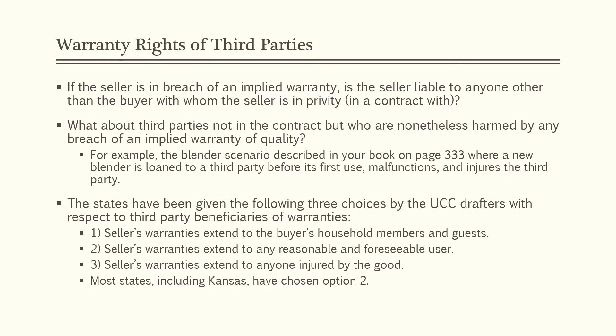In Kansas, the statute governing third-party beneficiaries is Kansas Statute Annotated 84-2-318. A seller's warranty, whether express or implied, extends to any natural person who may be reasonably expected to use, consume, or be affected by the goods and who is injured in person by breach of the warranty. A seller may not exclude or limit the operation of this section — sellers cannot force people to waive the implied warranty for third parties in their contracts.